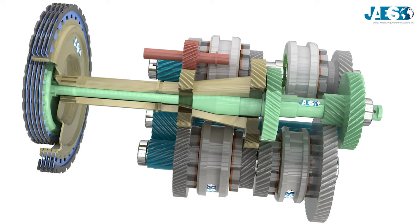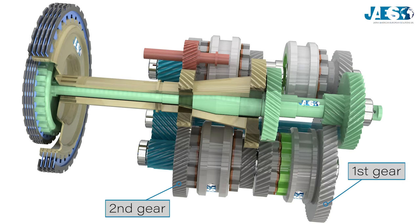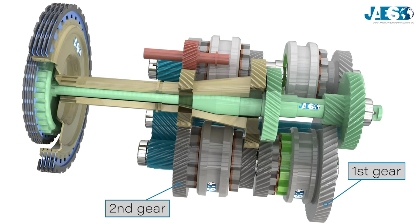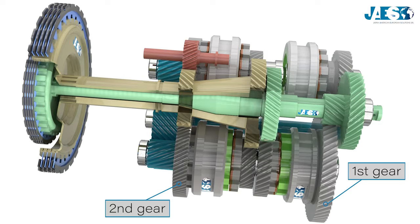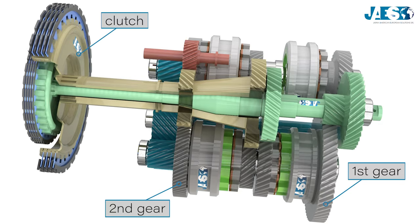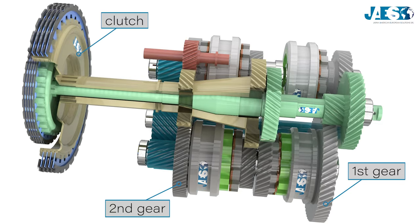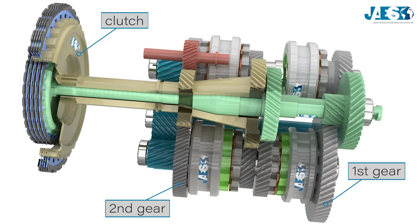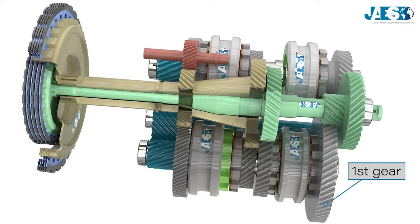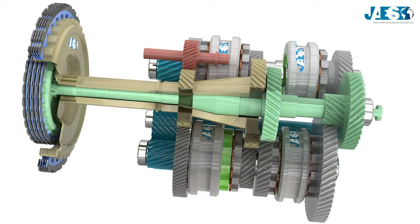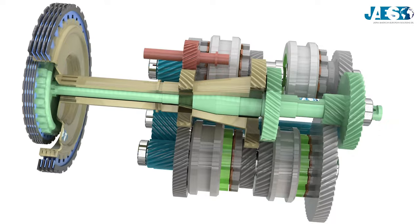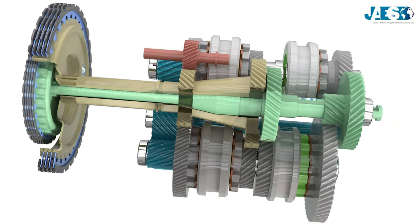When driving in first gear, the second gear sleeve and synchronizer are already engaged. Then the first clutch is released, and at the same time the second clutch is engaged, allowing a shift to second gear. This procedure is repeated for all gears, ensuring a very quick gear shift.